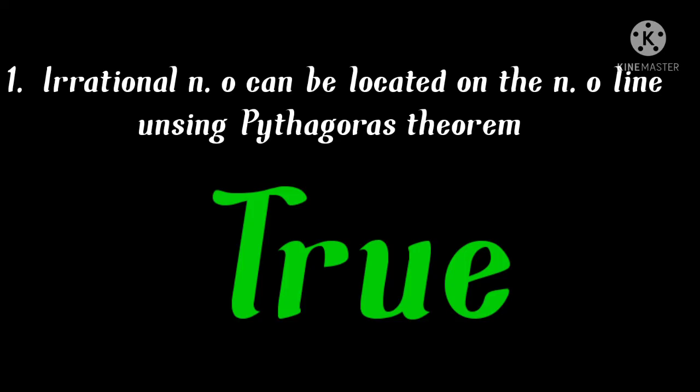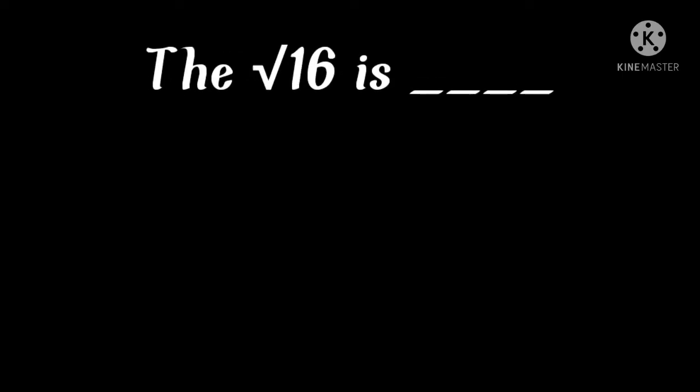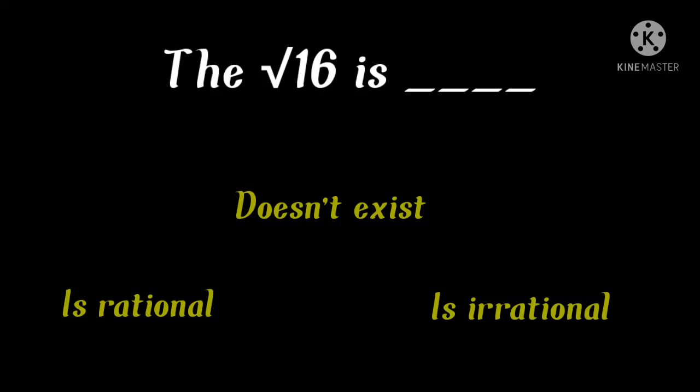Next question: The square root of 16 is — (a) doesn't exist, (b) rational, or (c) irrational. The answer is (b) rational, because √16 = 4, and 4 is a rational number.